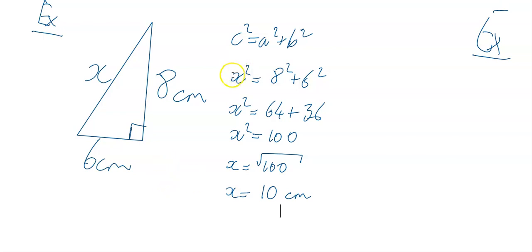Just to run through it very quickly: the formula I've used is c² = a² + b², where c is the hypotenuse. In my triangle, I identified the hypotenuse as the side opposite the right angle. So x² equals 8² + 6². Tidy that up and you'll get x² = 100, and x = √100, so x = 10.